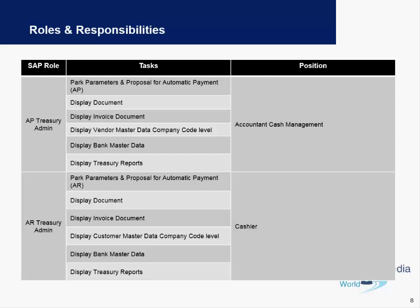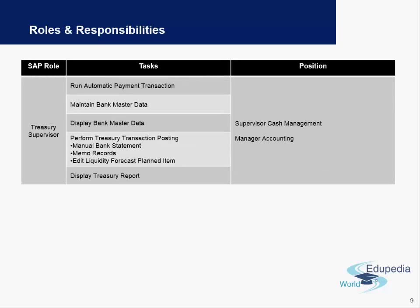There are many rules within the Cash Management module which are very important. For example, a treasury admin has the authority to only park any parameters as well as only display any documents. Supervisors have the authority to not just display but also maintain any master data for banks, and they are also authorized to run automatic payment transactions. These senior-level roles allow them to make payments and display treasury reports, helping managers take appropriate decisions on a weekly or monthly basis.